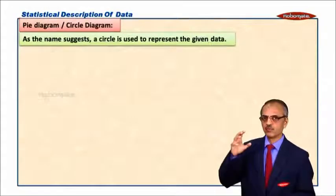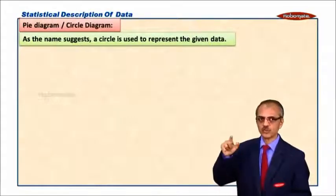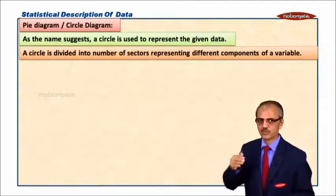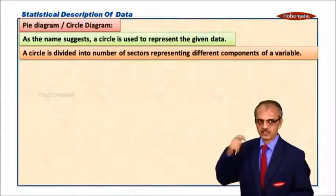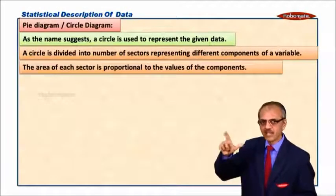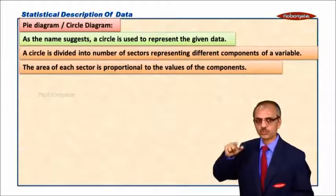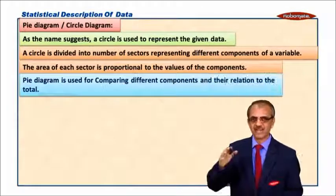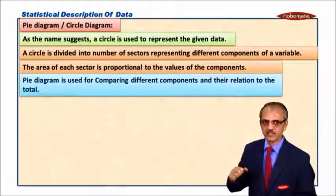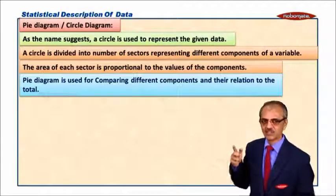The most commonly used is pie diagram or pie chart. Let us take a simple example for the pie chart. As the name suggests, a circle is used to represent the given data. A circle is divided into number of sectors representing the different components of a variable. The area of each sector is proportional to the value of the components. The pie diagram is used for comparing different components and their relations to the total.